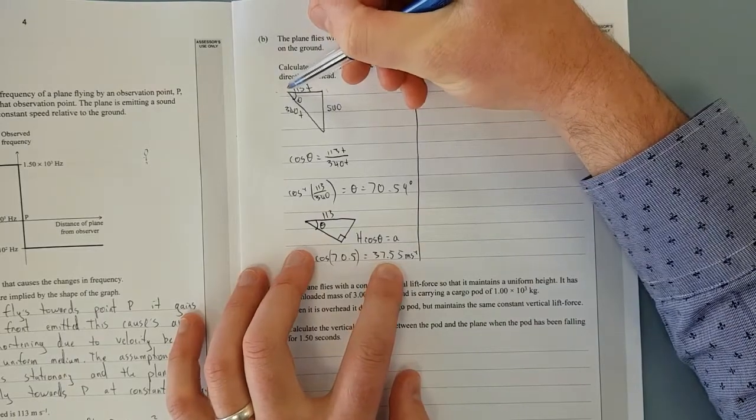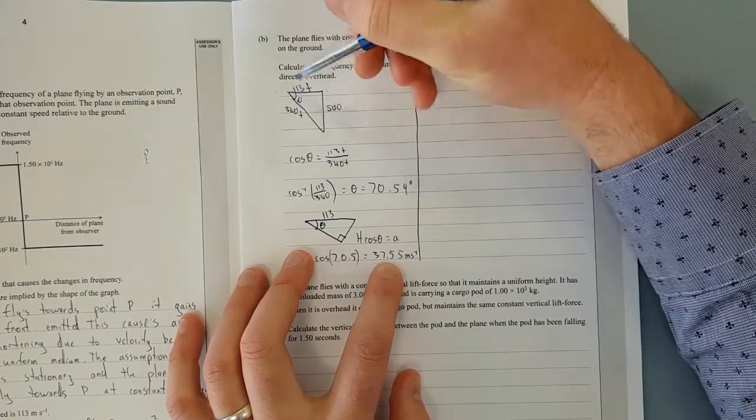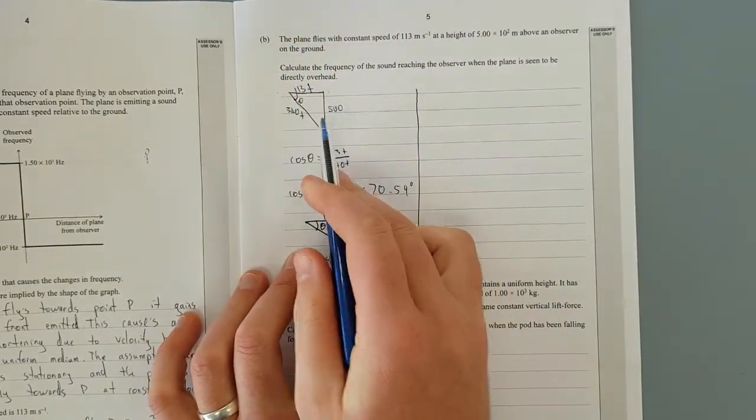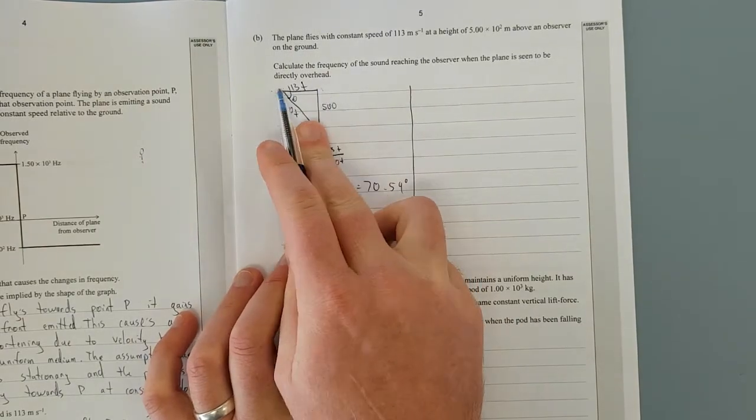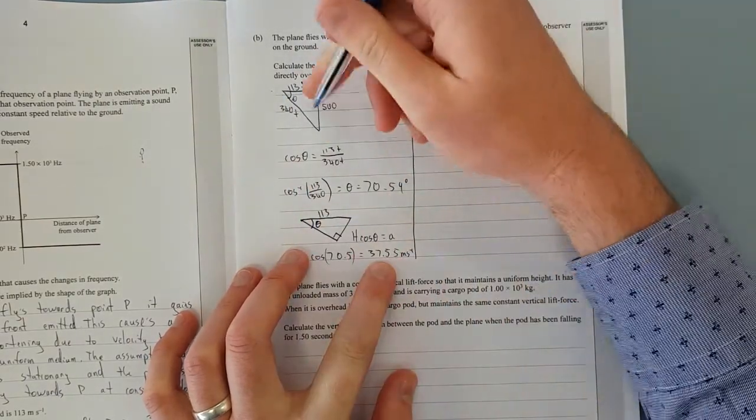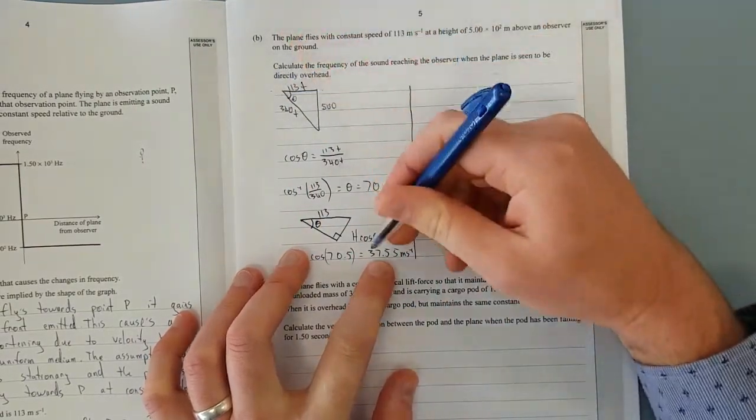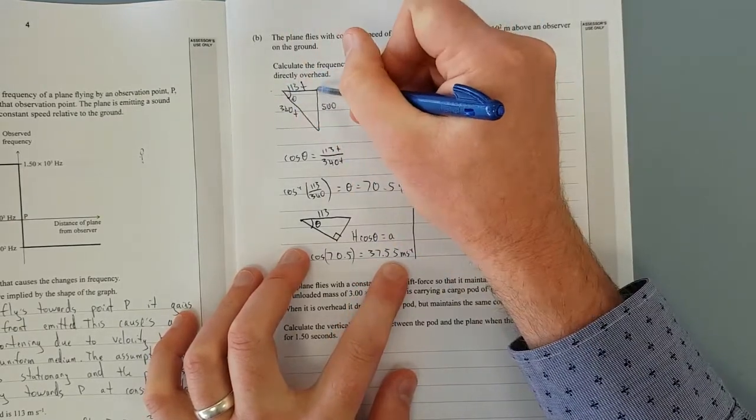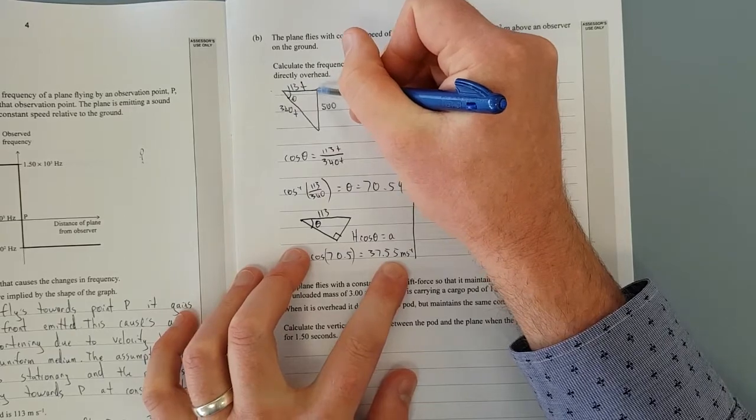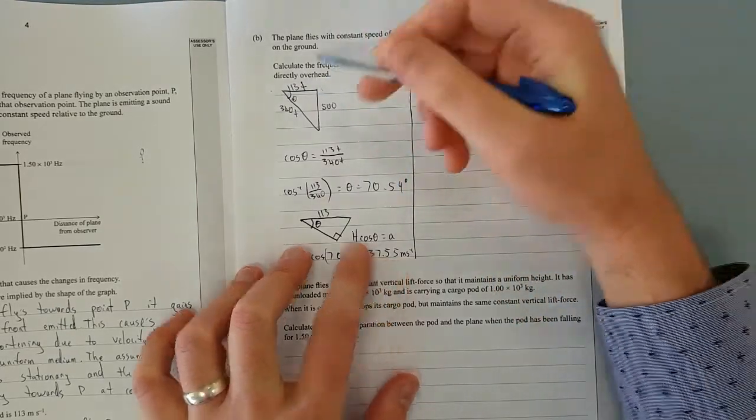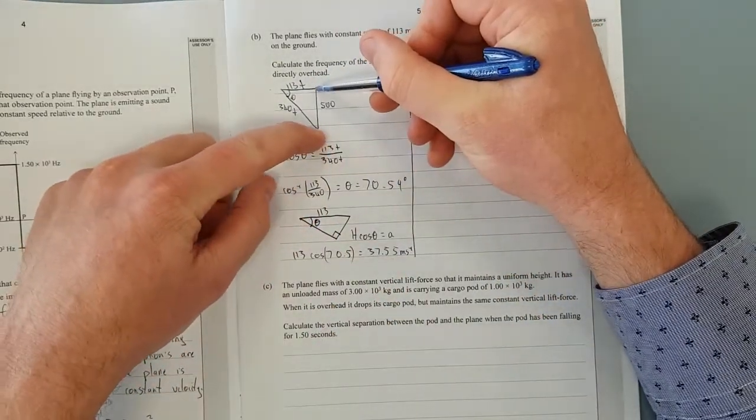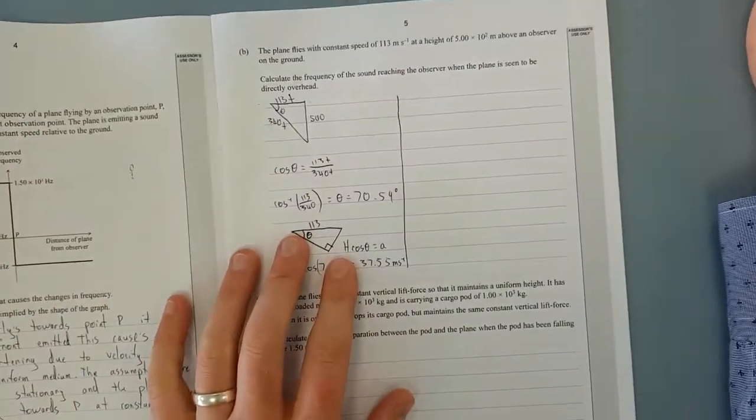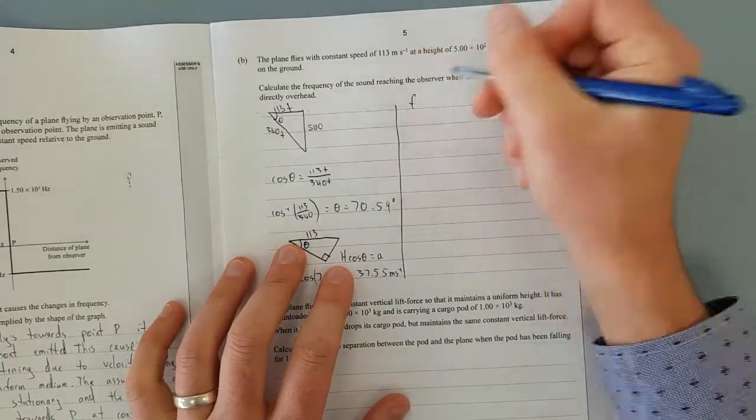That is the speed that the plane is flying towards the observer. Because he's flying above at 113 metres per second but he's coming towards the observer at 37.55 metres per second. When the plane is directly above it's not coming towards or going away from the observer because that distance isn't changing when he's directly above.